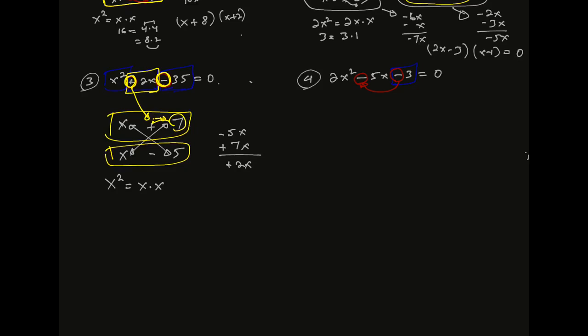In this case, we have to use the 2x to make it, so we can use each other. Now, we have to use 4x to be able to use the 2x. We have to find 3 times 1, and 3 times 1 times 3.